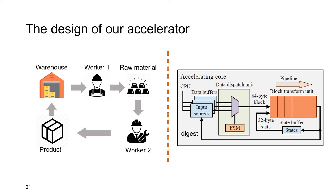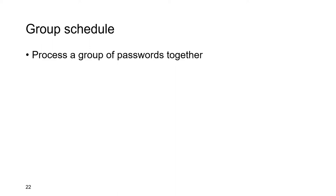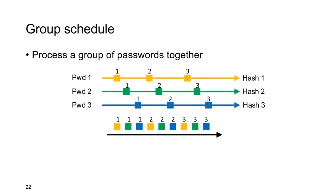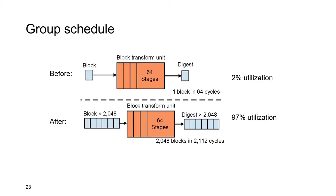With this basic architecture, we apply several techniques to solve the difficulties mentioned above. To solve the data dependency problem, we use the group schedule technique. Noticing that there are no data dependencies between blocks in different passwords, we can process a group of passwords together. In our implementation, we choose a 64-stage pipeline. Before applying group schedule, the pipeline stalls due to data dependency, processing only one block in 64 cycles — reaching only 2% utilization. If we group 2,048 passwords together, the pipeline can process 2,048 blocks in 2,112 cycles, achieving close to 97% utilization.